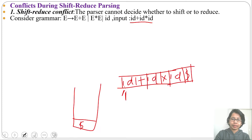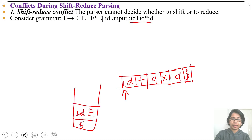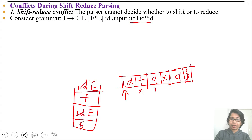Now the pointer is here, so this id will shift onto the stack. Now stack has id, then this id will reduce to E, then it will shift plus, then it will shift id, and this id again reduces to E. So till now there is no conflict; after that there are chances of conflict.